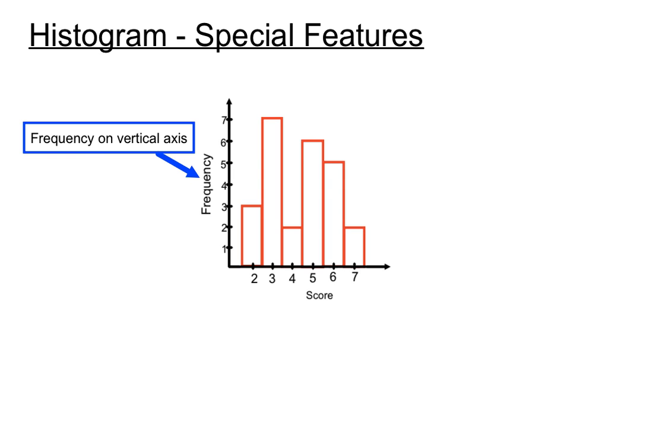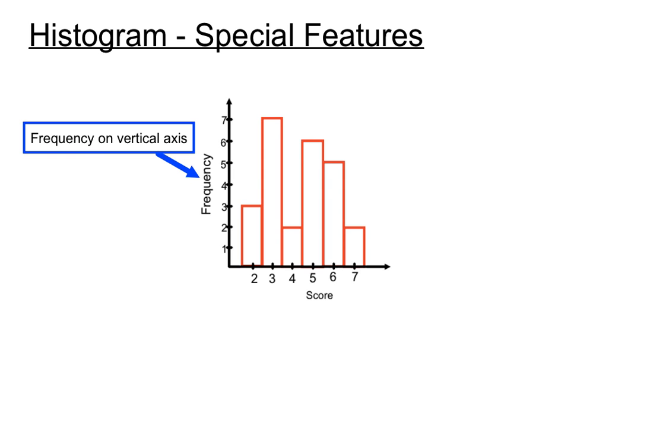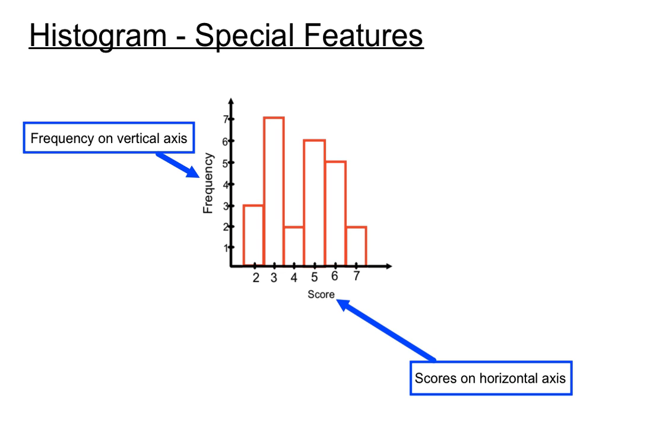We have the frequency on the vertical column each time. We have the scores down the bottom on the horizontal axis. One of the other features is that we always reserve a half a column width here before we start. That's a special feature of a frequency histogram. We don't start our column right in the corner there. We leave a half a column width there.